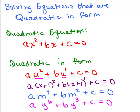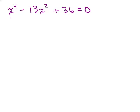We're going to try an example where we have something quadratic in form and rewrite it to look like au squared plus bu plus c. Here we have an equation that is quadratic in form because if you double the exponent on the middle term, you get the exponent on the first term. We'll use substitution: let u equal x squared, the middle term's variable.